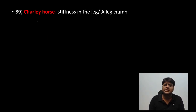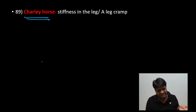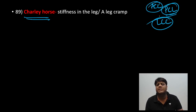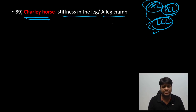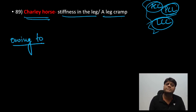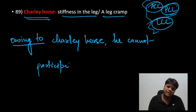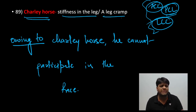Next: 'Charlie horse.' It means stiffness in the leg or a leg cramp. I personally had ligament injuries — ACL, PCL, and LCL reconstruction — so I experienced this. For example: 'Due to a Charlie horse, he cannot participate in the race.' So Charlie horse means a cramp or stiffness in the leg.